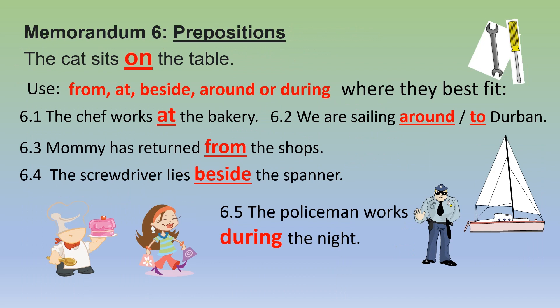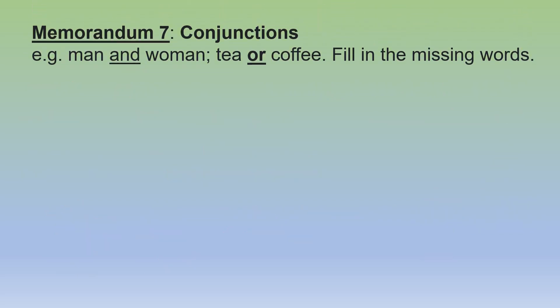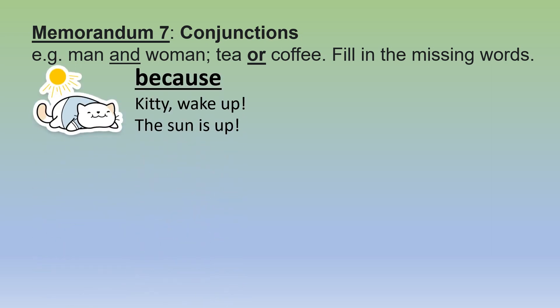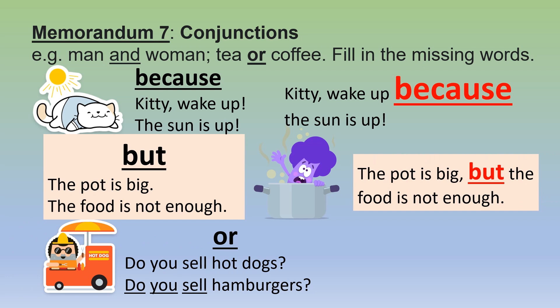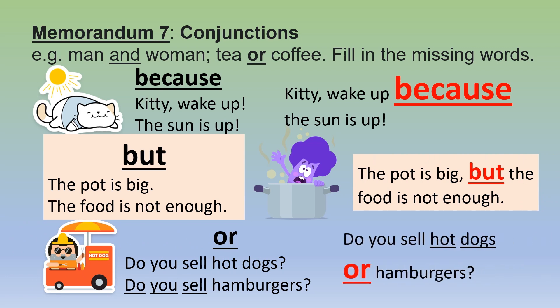Memorandum six — prepositions. The cat sits on the table. Use from, at, beside, around or during. Answers: the chef works at the bakery; we are sailing around — or to — Durban; mummy has returned from the shops; the screwdriver lies behind or beside the spanner; the policeman works during the night. Memorandum seven — conjunctions. Kitty, wake up because the sun is up. The pot is big, but the food is not enough. Do you sell hot dogs or hamburgers?